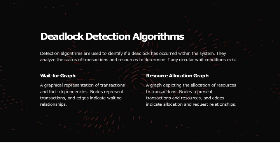First, we will see about the wait-for graph. It is a graphical representation of transactions and their dependencies. Nodes represent transactions, and edges indicate waiting relationships between them.